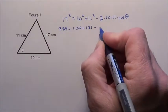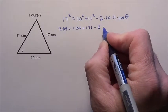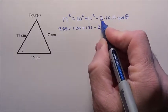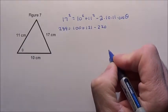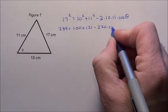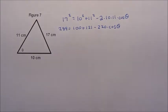That's 20 times 11. 20 times, well, it would be easier to do 110 times 2. I get 220, either way it's easy, cosine of theta.